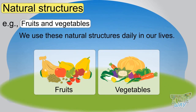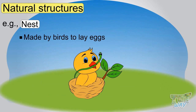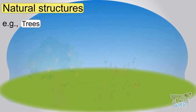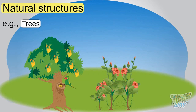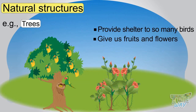Nest is a natural structure made by birds to lay eggs. Trees are natural structures that provide shelter to so many birds and also give us fruits and flowers. So we are surrounded by structures all around us, both natural and man-made.